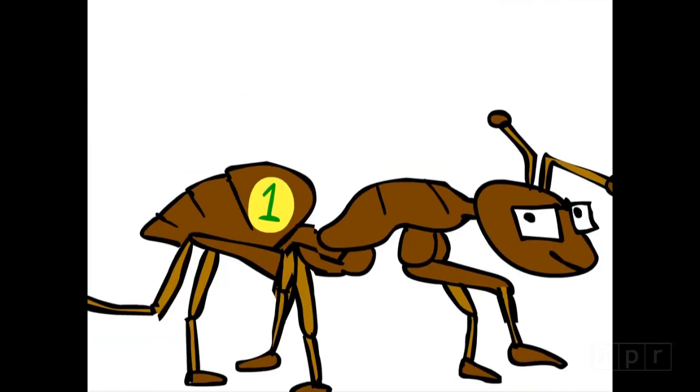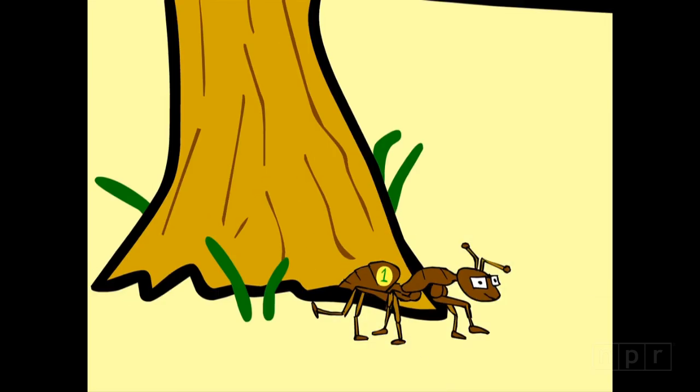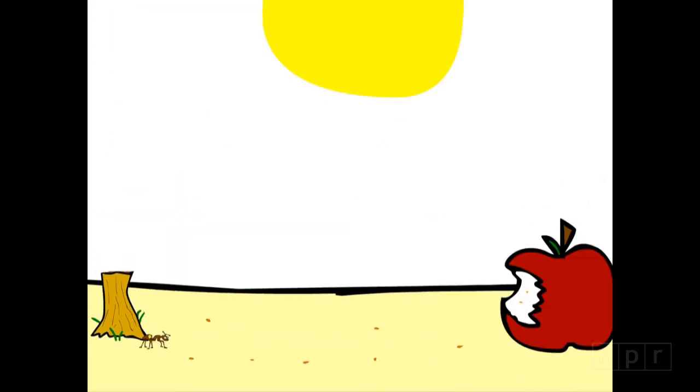So we'll take an ant, we'll call it ant number one. Okay, so ant number one, we want to watch you take ten steps to the food source. One, two, three, four, five, six, seven, eight, nine, ten. And then ten steps home. Now, could you just go back to the apple? Okay. Thank you.